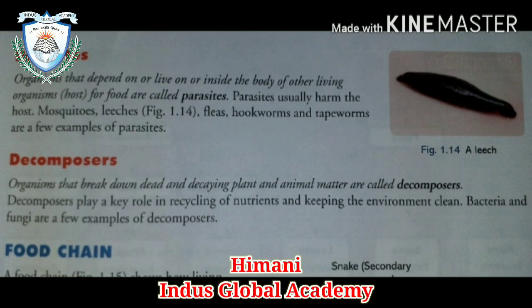Then decomposers. Organisms that break down dead and decaying plant and animal matter are called decomposers. Decomposers play an important role in recycling of nutrients and keeping the environment clean. Bacteria and fungi are a few examples of decomposers.